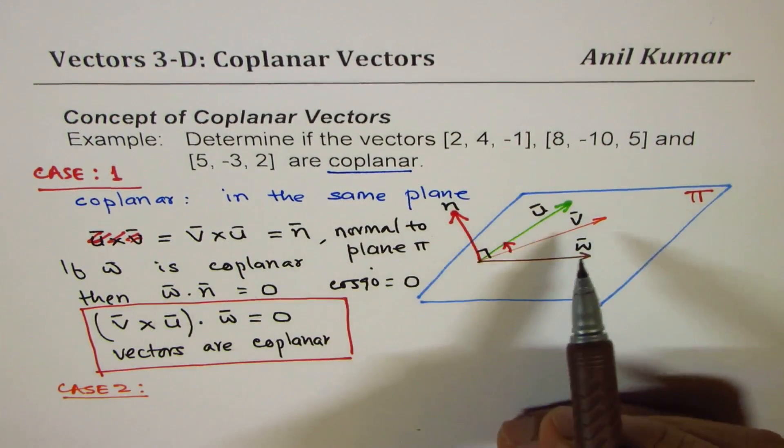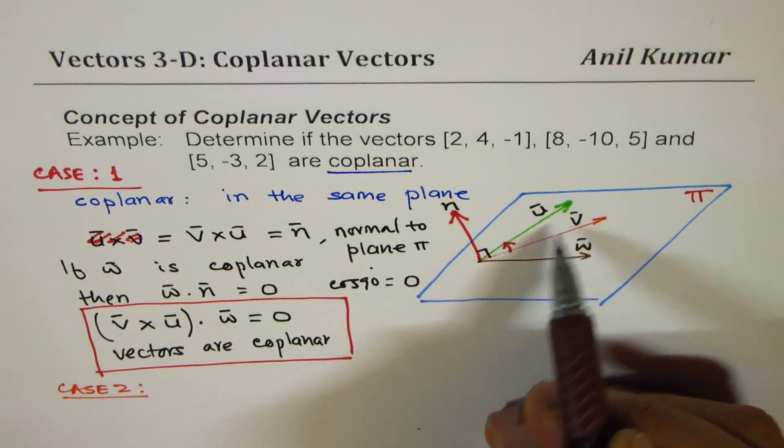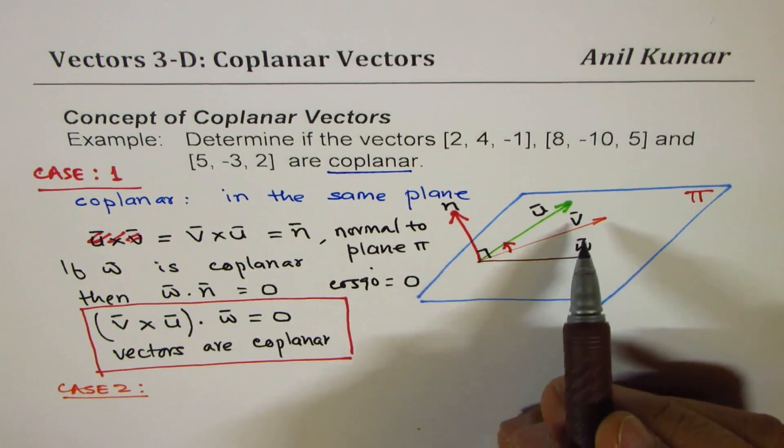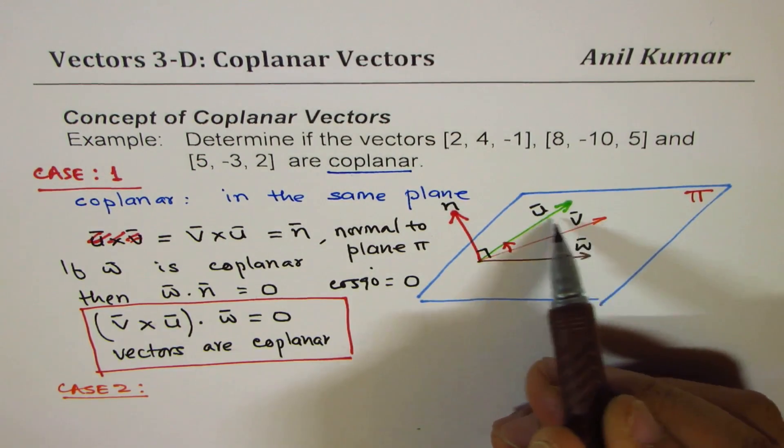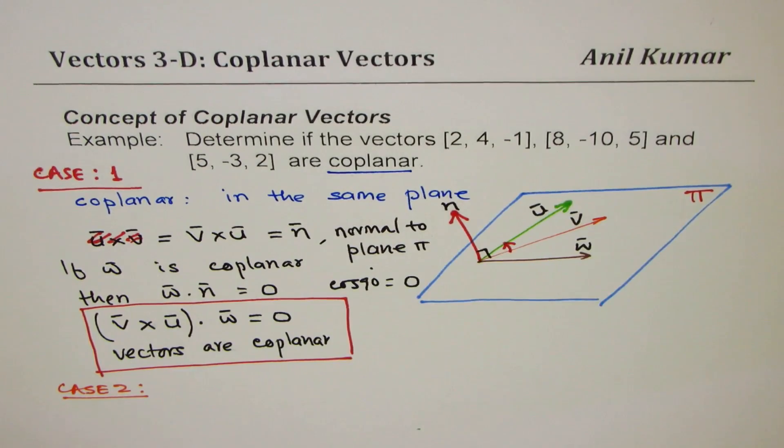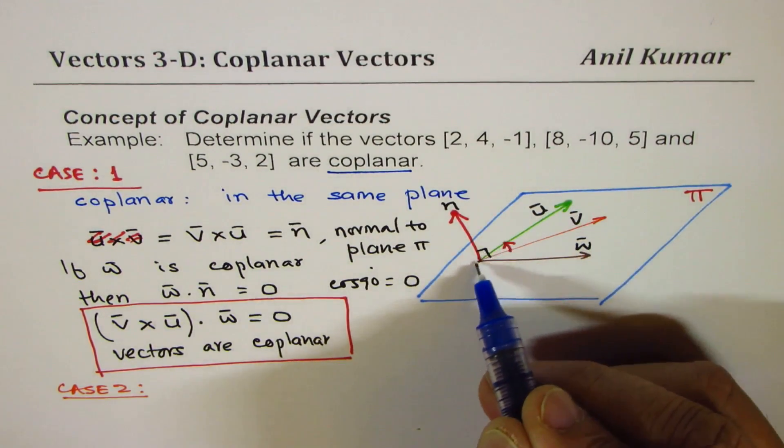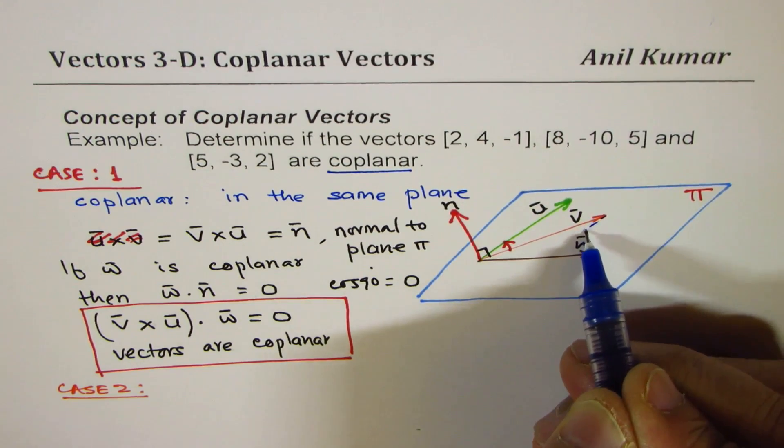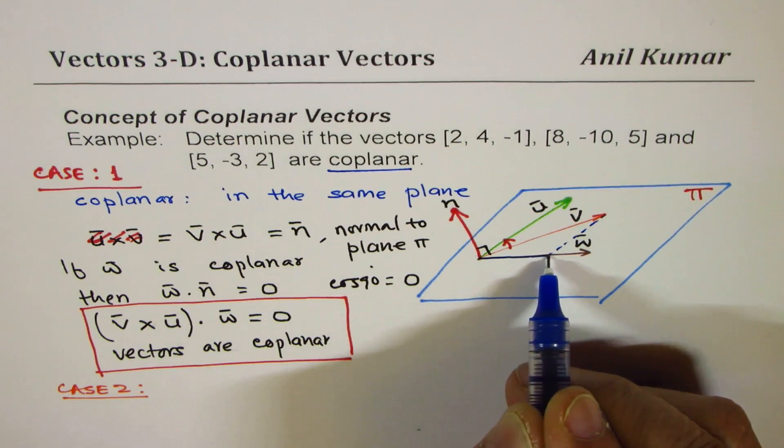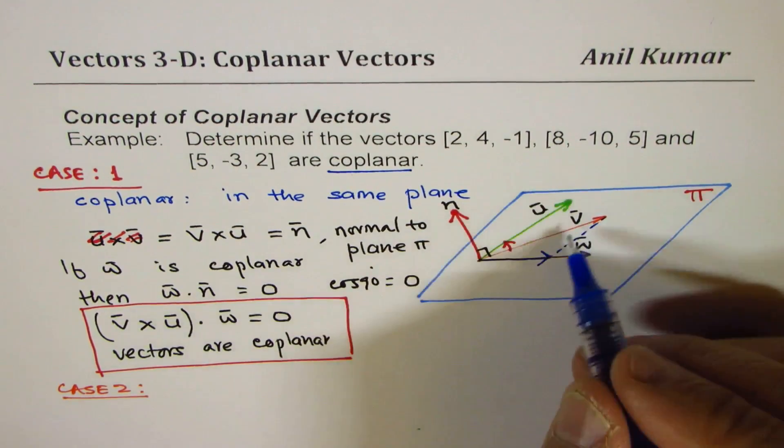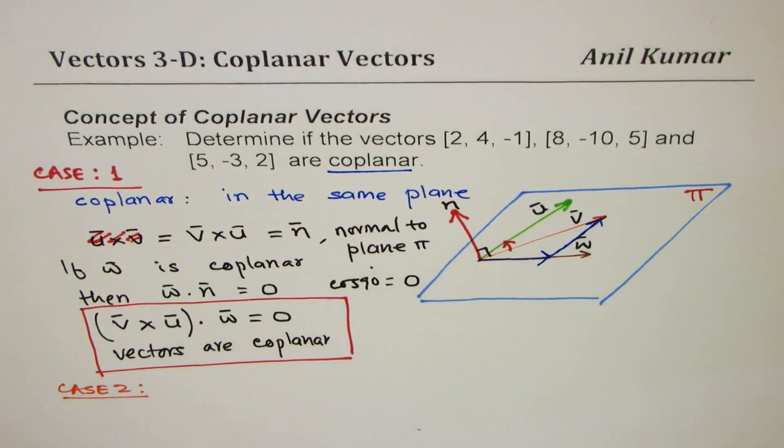Case 2 is that, in case they all are coplanar, then I could write one vector as a combination of other two. For example, I could represent vector v as a combination of these two, making a parallelogram.